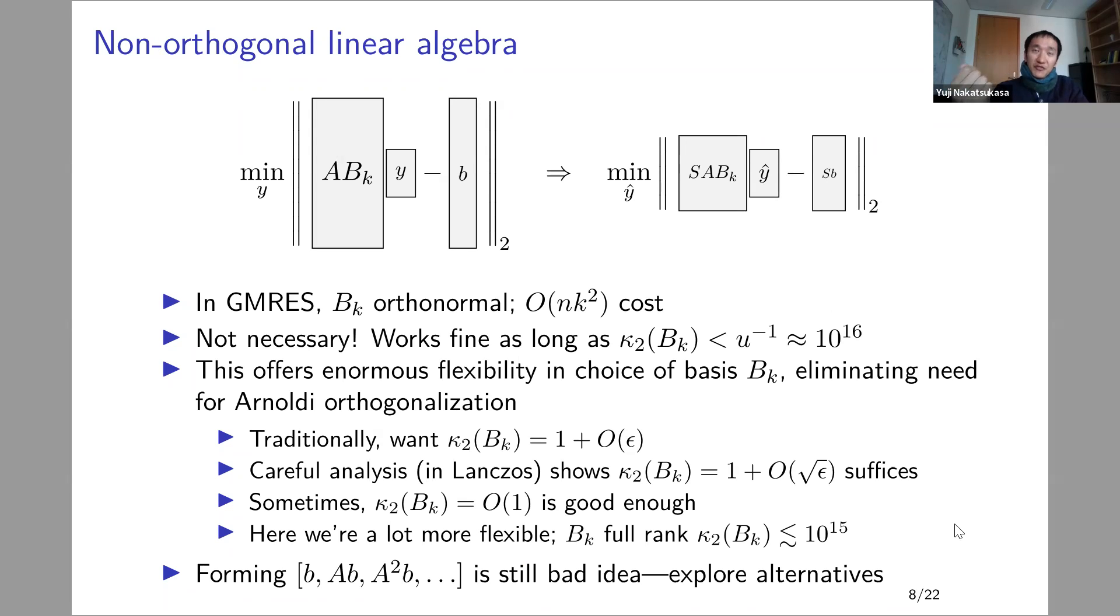So the observation is BK, there's a lot of room for flexibility here. We used to require that it is orthonormal when we do Arnoldi. We don't need that. We don't even need it to be well conditioned. All we need essentially is that it is numerically full rank. So the condition number of BK is like 10 to 15 or something. It is fine. This really gives us a lot of room to explore alternative methods for forming BK, which is a basis for the Krylov subspace.